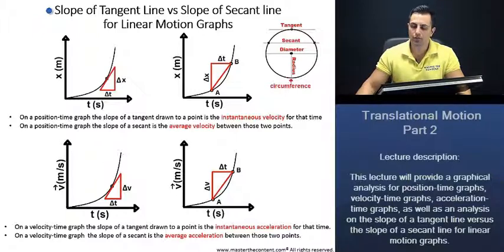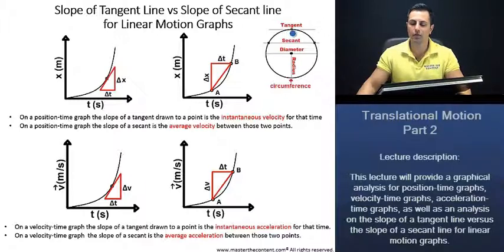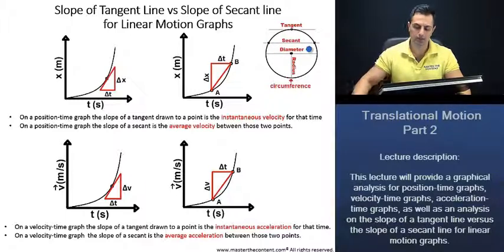Just a quick refresher. Recall that a tangent crosses the curve at one point, and the secant crosses the curve at two points.